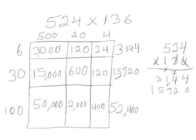We're multiplying by the tens. Now we're multiplying our 100 times 4. 400. 100 times 20, 2,000. 100 times 500, 50,000.